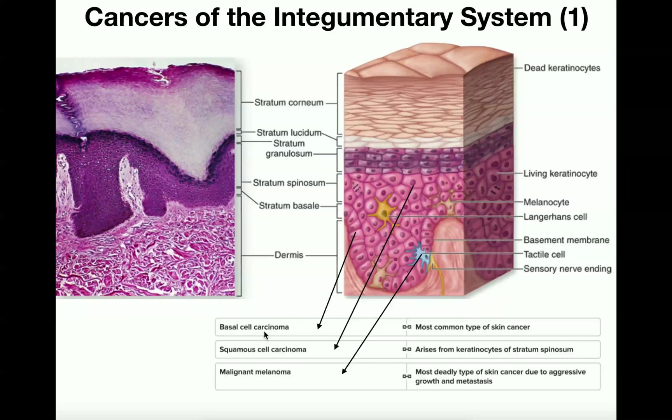There are three major cancer types of the integumentary system: basal cell carcinomas, squamous cell carcinomas, and malignant melanoma.